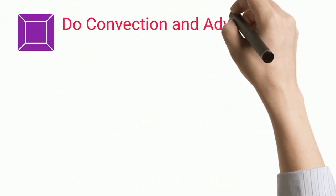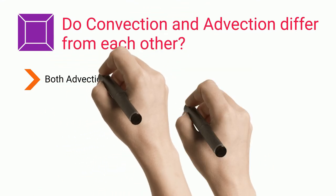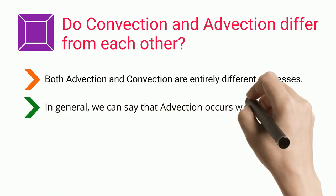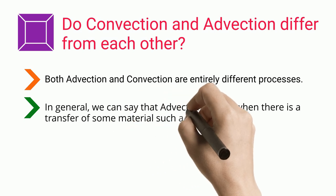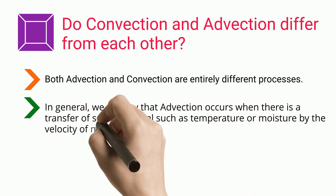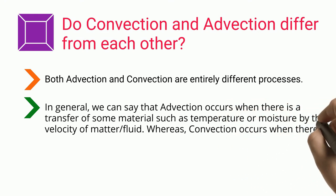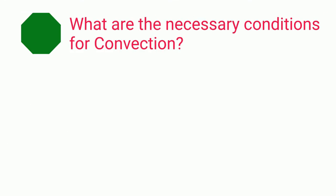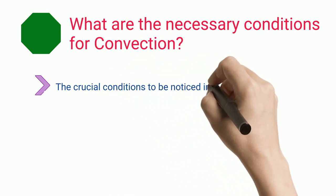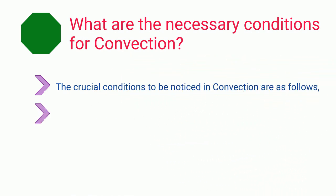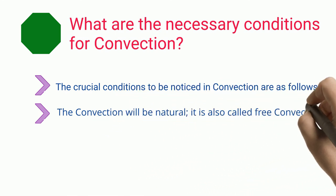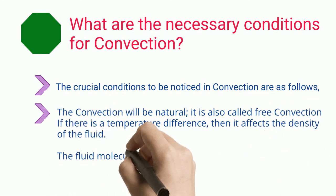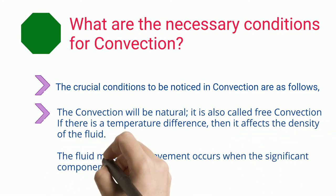Do convection and advection differ from each other? Both advection and convection are entirely different processes. In general, advection occurs when there is a transfer of some material such as temperature or moisture by the velocity of matter or fluid, whereas convection occurs when there is a difference in density due to temperature gradients. What are the necessary conditions for convection? Convection will be natural (also called free convection) if there is a temperature difference that affects the density of the fluid, causing heavier elements to fall and lighter elements to rise.